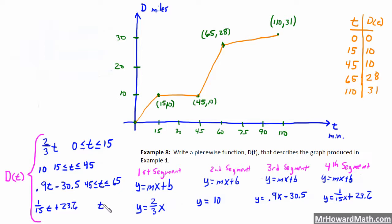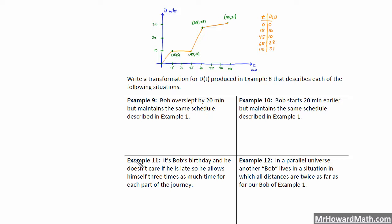And that is good for a domain of t is less than or equal to 110, my rightmost point, greater than or equal to 65, my leftmost point. Okay, so that part is done. Let's move on to the last part of this lesson. All right, these last four examples here just ask us basically for transformation. So it says write a transformation for D of T produced in example 8 that describes each of the following situations. So we have our graph here.